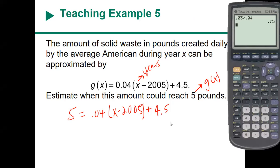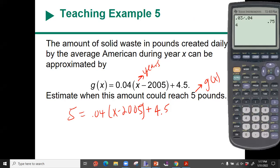Okay, so after you went through this and solved, I'm going to do it strictly starting from the calculator. The first thing I should do is subtract 4.5, so we have 5 minus 4.5. After I subtract, then I'm going to have to divide by 0.04, and then plus 2005.